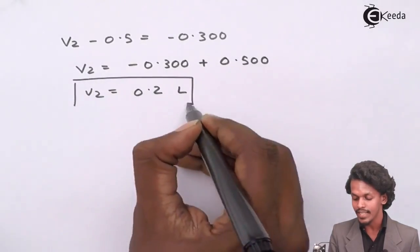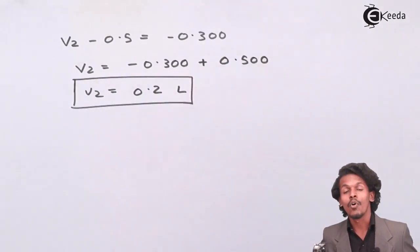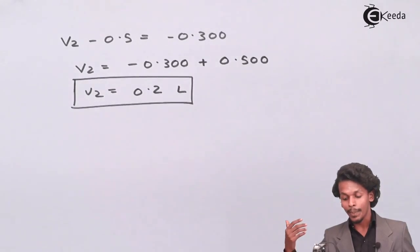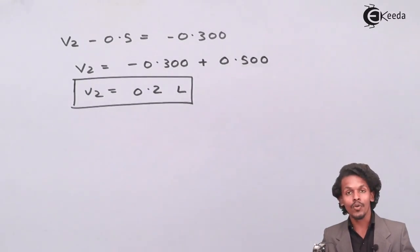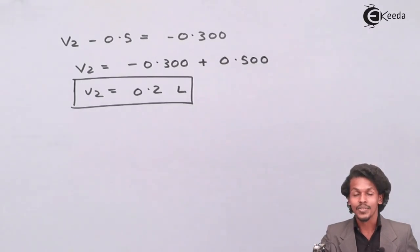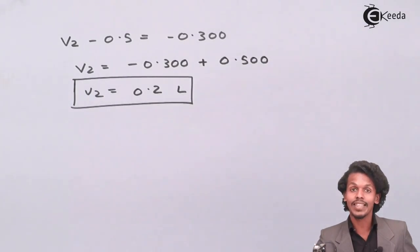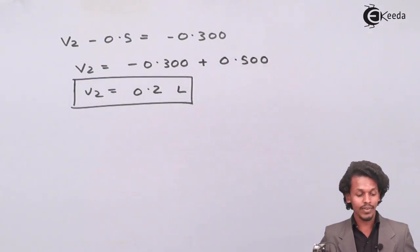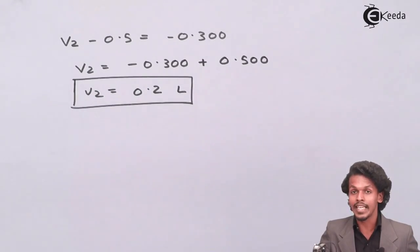This is the final answer that I have got. The volume will be changed from the initial volume of 0.5 liter to a final volume of 0.2 liter. This is how we have calculated the value of V₂. Thank you friends for watching this video. I hope you have understood how to calculate this kind of numerical which is based on the work done during the expansion of the gas isothermally and irreversibly. Share this video with your friends and don't forget to subscribe.